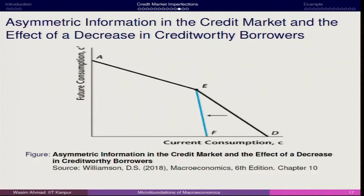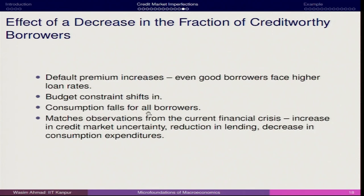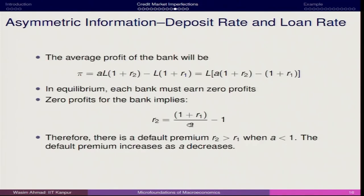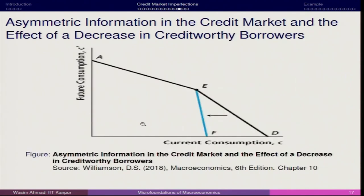As we decrease in creditworthy borrowers — decrease in A — the budget constraint becomes much steeper, meaning the representative consumer has to compromise on current consumption. Even good borrowers face higher rates, and consumption falls for all borrowers, which matches observations from current finance. This scenario was quite applicable to the global financial crisis when there were large numbers of defaults on mortgage loans, which impacted the economy very adversely. The formula R2 = (1 + R1)/A shows exactly why the borrowing rate shoots up with uncertainty.